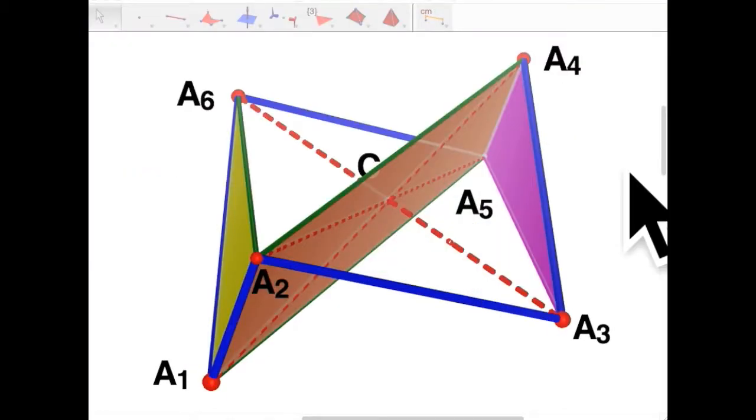We can, of course, subdivide the 3D parallelo hexagon in two other ways by connecting the opposite sides A1 A2 and A4 A5 instead, so that it looks like this.